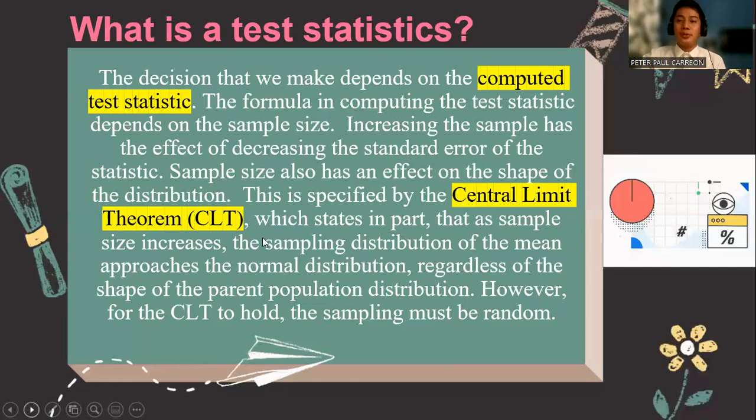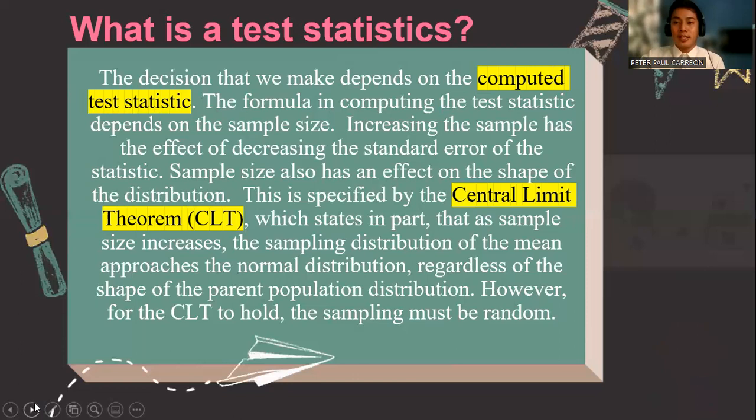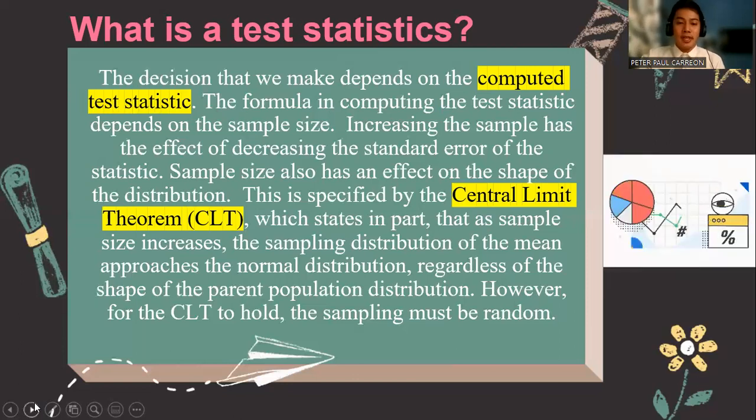In those two examples, if the population standard deviation is given, then that is a Z test. And if the population standard deviation is not given, then we use a small letter S to represent the value for the sample standard deviation.